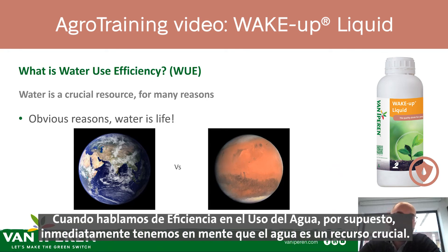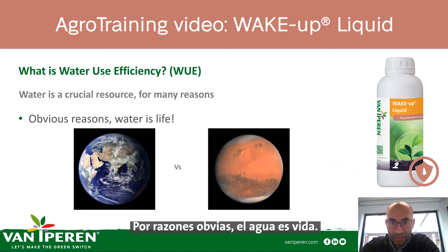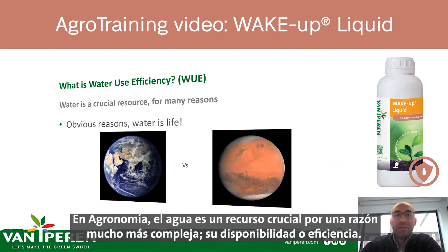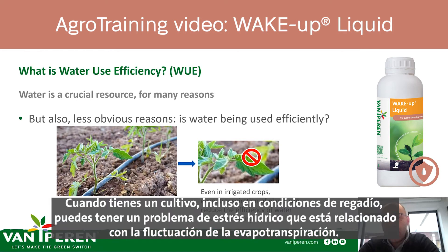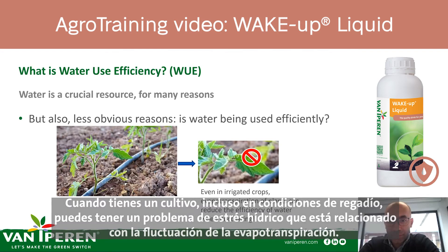When we talk about water use efficiency, we immediately have in mind that water is a crucial resource — water is life. But in agronomy, water is a crucial resource for a much more complex reason: its availability, or let's say efficiency. When you have a crop, even in irrigated conditions, you have the problem of hydric stress that is related to the fluctuation of evapotranspiration.